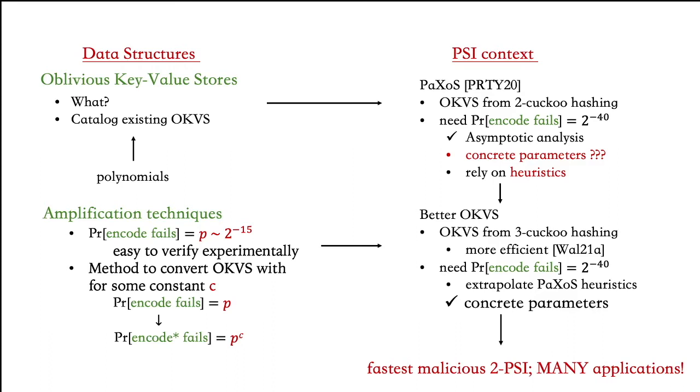Finally, we show that our improved OKVS gives us the fastest malicious two-party PSI protocol on slow and medium networks by plugging in our better OKVS into the construction of PRTY20. We also show many applications where OKVS can be a plugin replacement for polynomials to improve their efficiency.